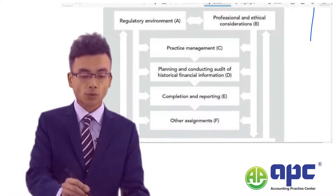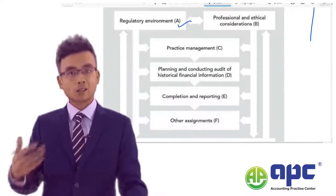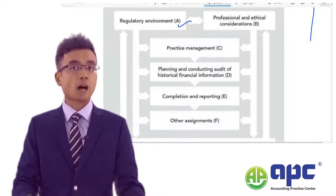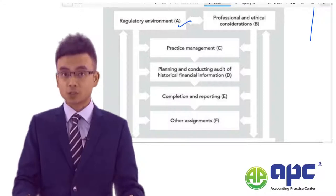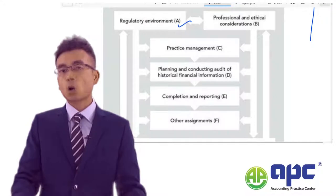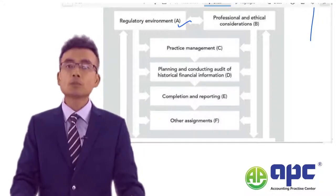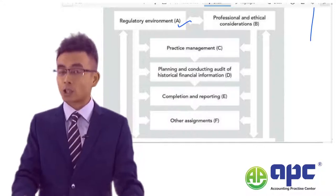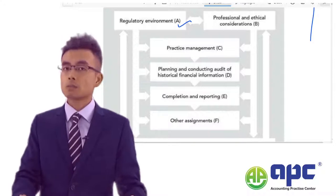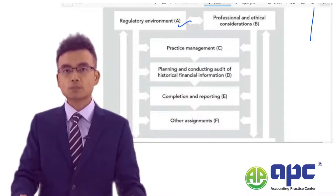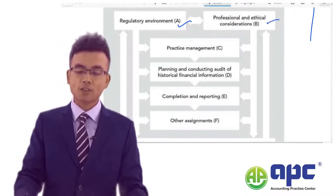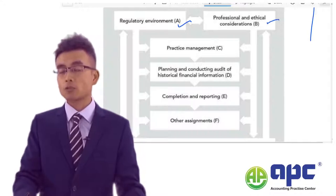In Part A, we'll be going through the regulatory environment. We'll explain the Board for International Standards on Auditing and IFAC, or International Federation of Accountants. We'll also cover other issues such as money laundering, which is illegal, and why external auditors should be professionally sceptical about this. That leads us to the professional and ethical considerations in Part B of the syllabus.